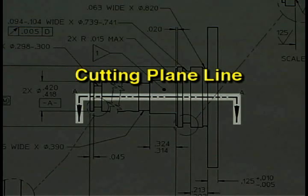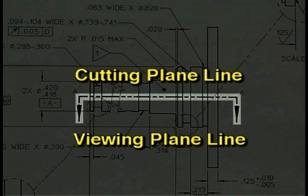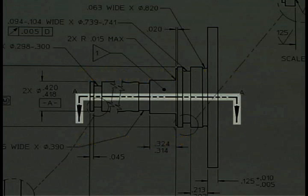A cutting plane line like this may be found. The cutting plane line, also called a viewing plane line, is typically drawn as a thick line with a pattern consisting of one long dash followed by two short dashes.